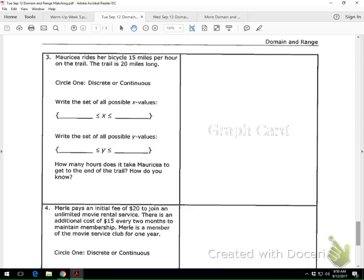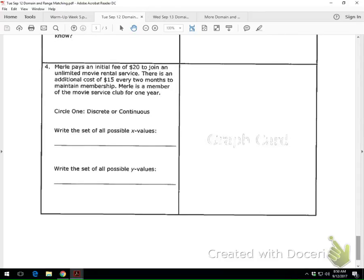And number four. It says, Marley pays an initial fee of $20 to join an unlimited movie rental service. There is an additional cost of $15 every two months to maintain membership. Marley is a member of the movie service club for one year. So, discrete or continuous? Discrete. Perfect. Graph. F.